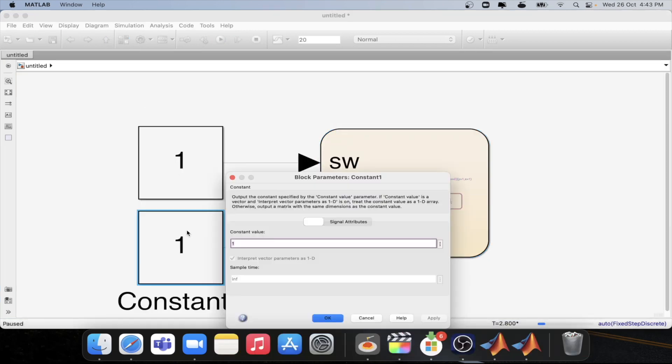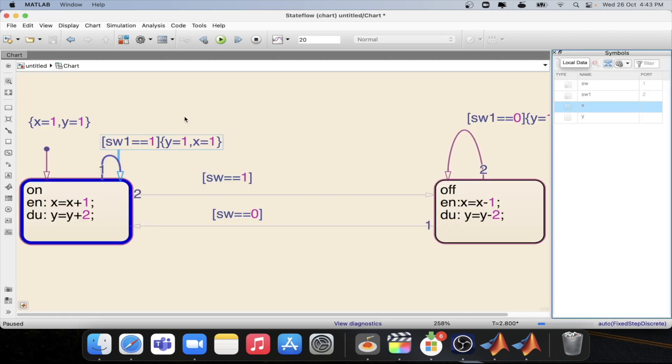So let's disable that transition also by setting it to 0. Now if we step again then it will go to the off state. Now we are at the off state.